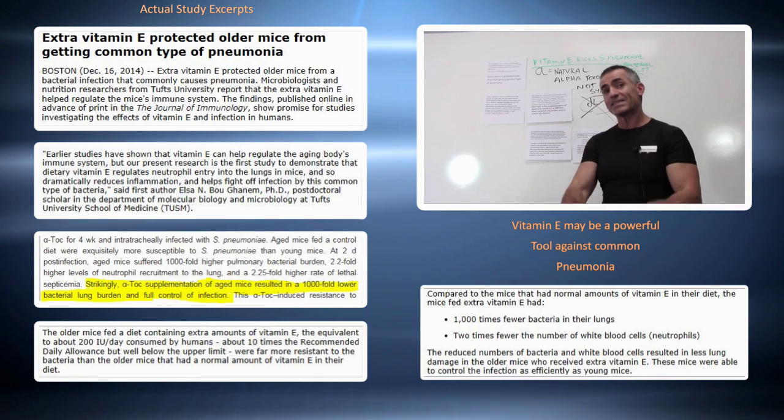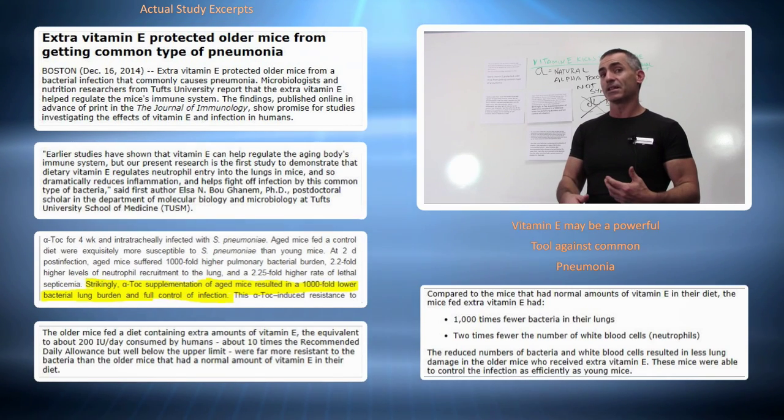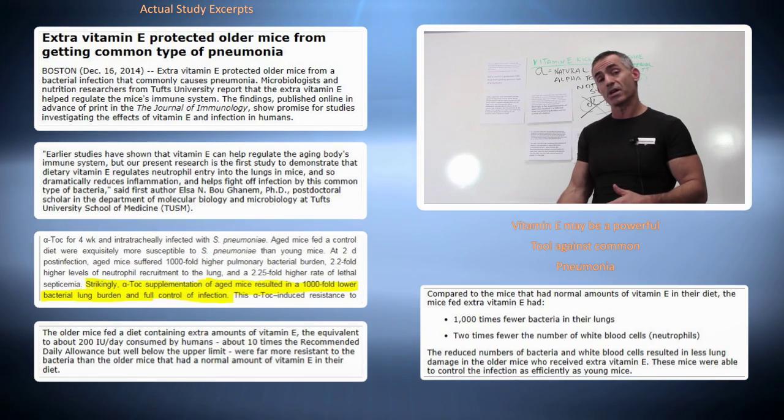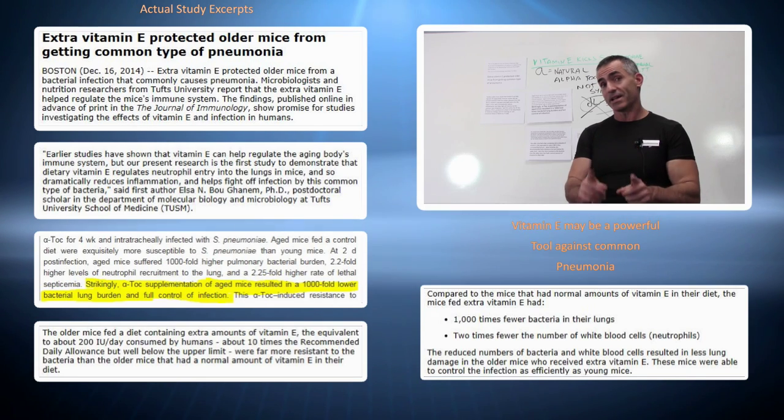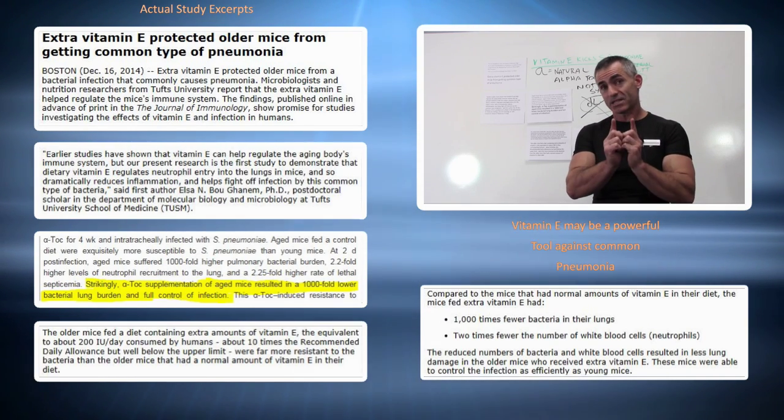Now for the mice that got a little extra vitamin E, about 10 times the recommended daily allowance for humans, otherwise known as 200 IUs of natural vitamin E, this is what happened with that little extra vitamin E in the diets of these animals.